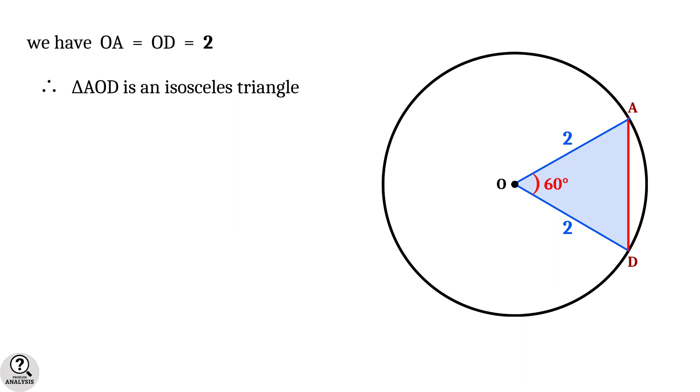And hence by the property of isosceles triangles, angles opposite to equal sides are also equal. That is, angle OAD equal to angle ODA, which is equal to 180 minus 60 divided by 2, equal to 60 degrees.